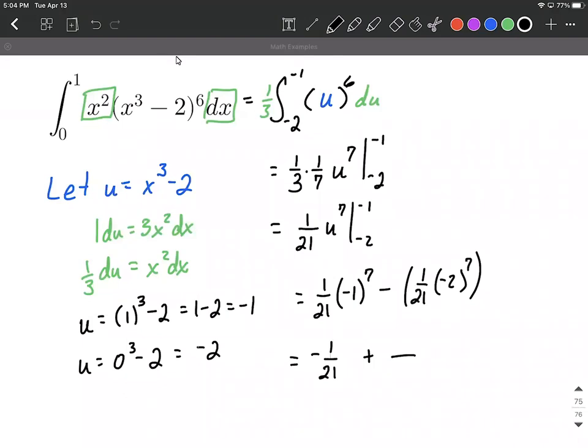Two to the seventh power is 128, and our denominator is 21. A little bit of combining these together—we already have a common denominator, so that's nice. We can say negative one plus 128 is 127 over 21.